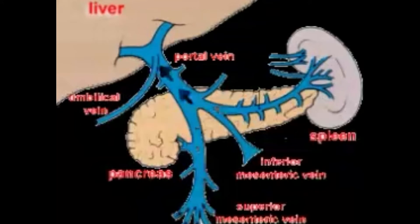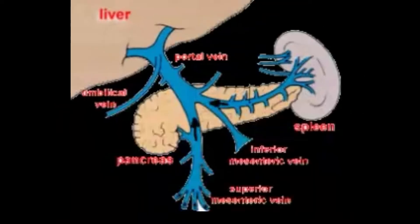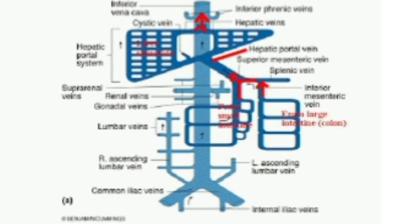The hepatic portal system is a unique vascular connection between the digestive tract and the liver. Its significance is that it brings blood from the intestine to the liver before it is delivered to the systemic circulation, due to which the liver gets its nourishment.